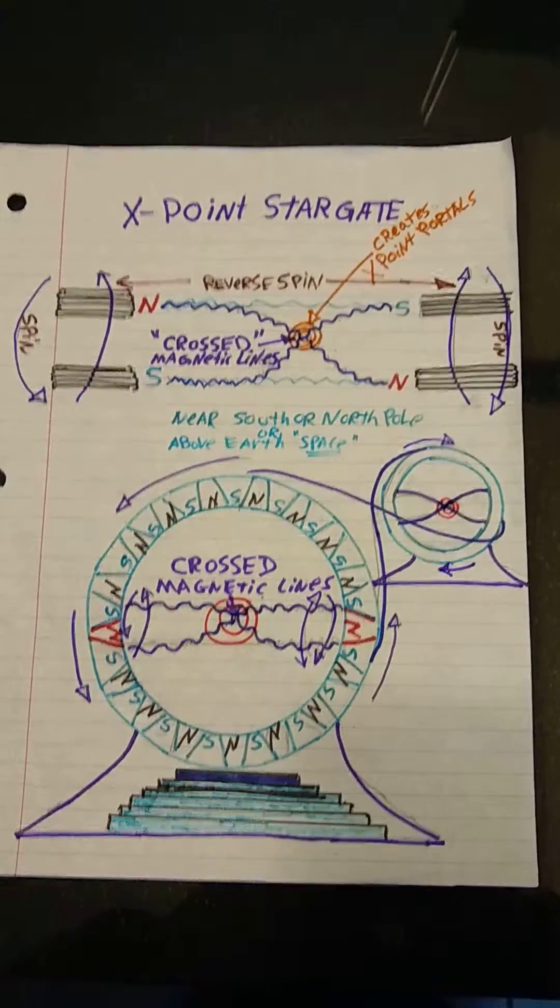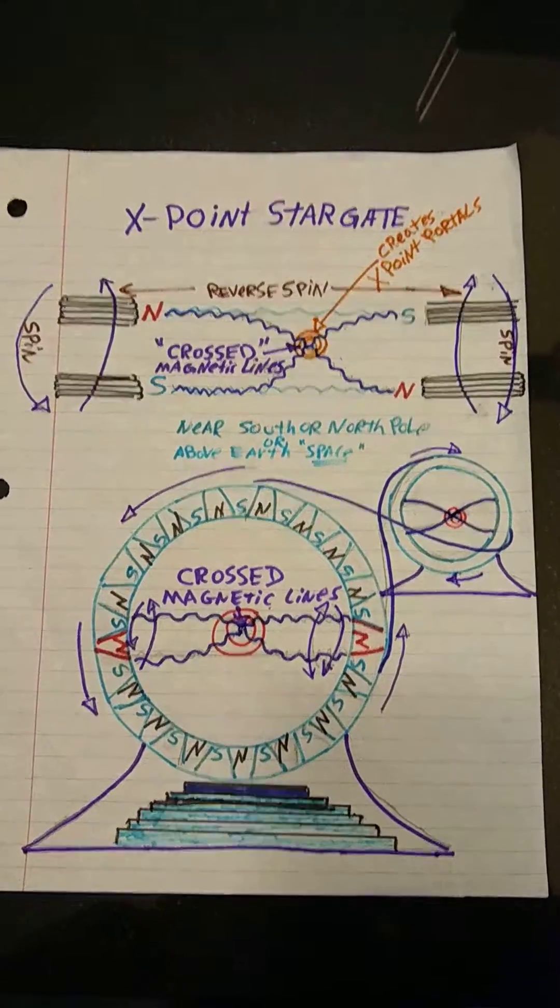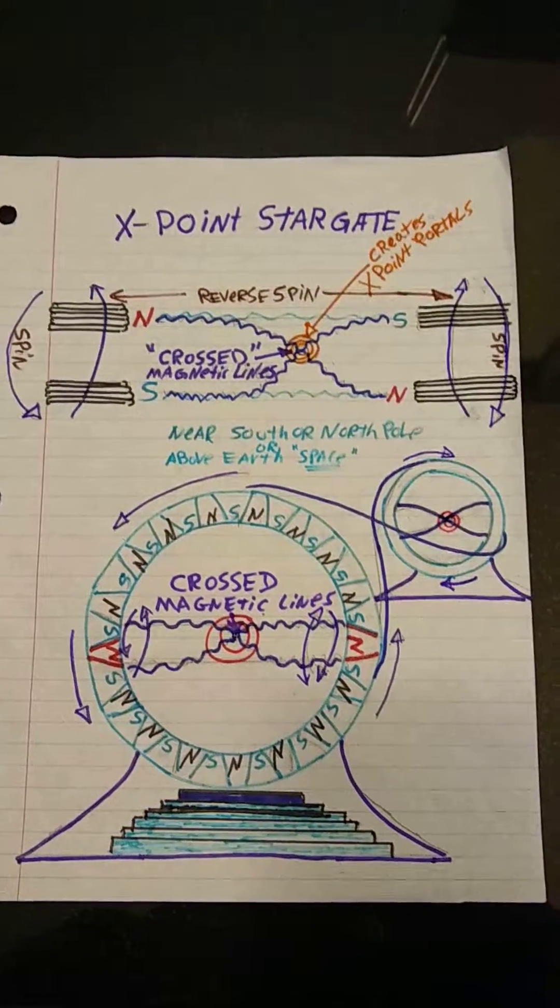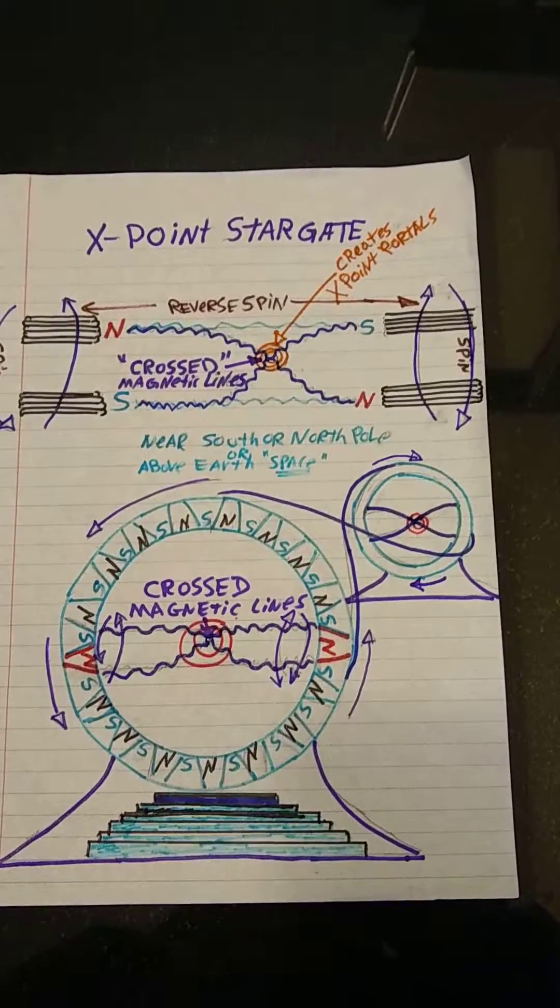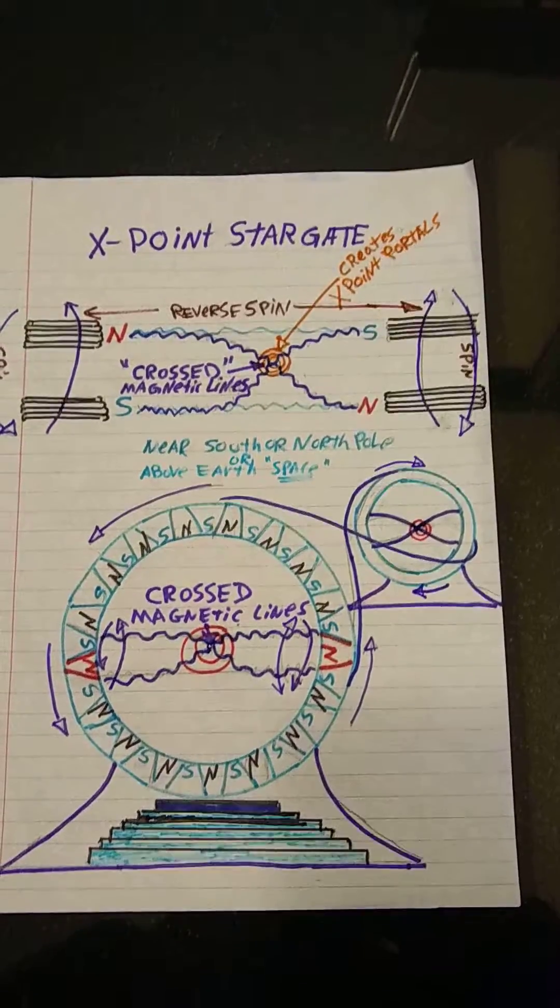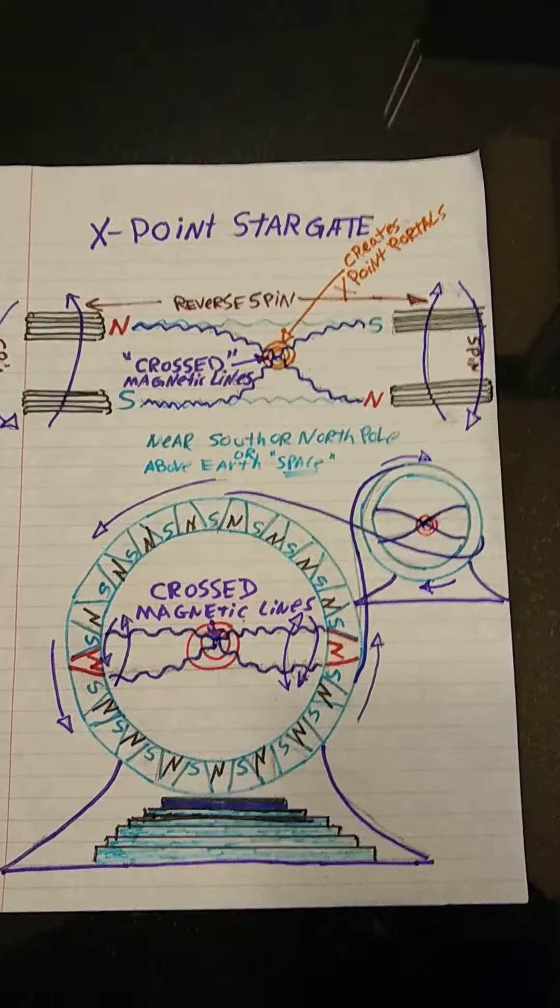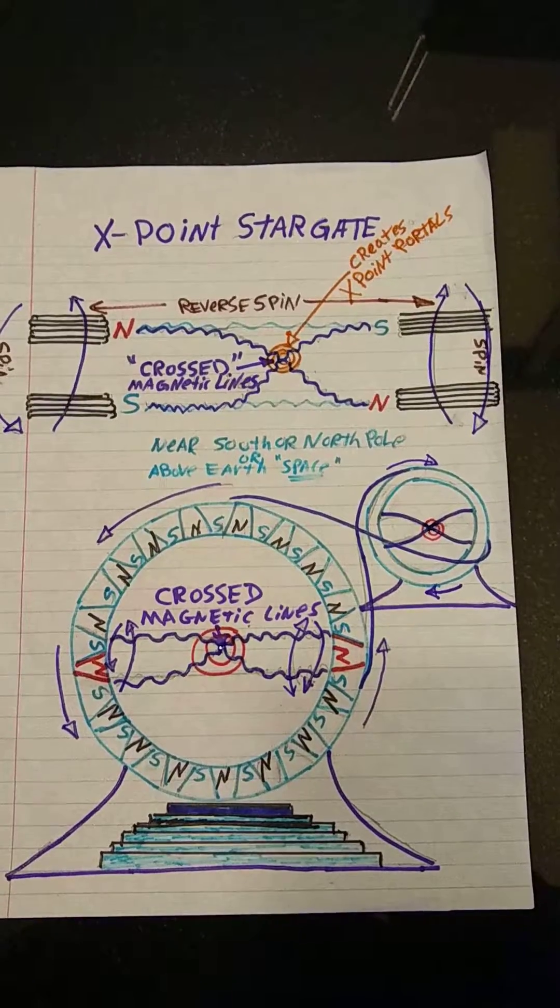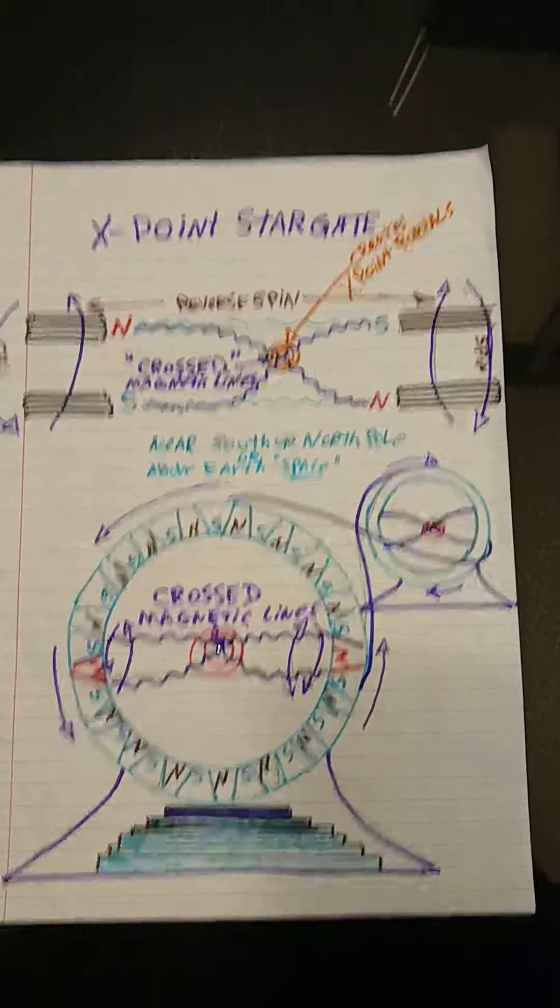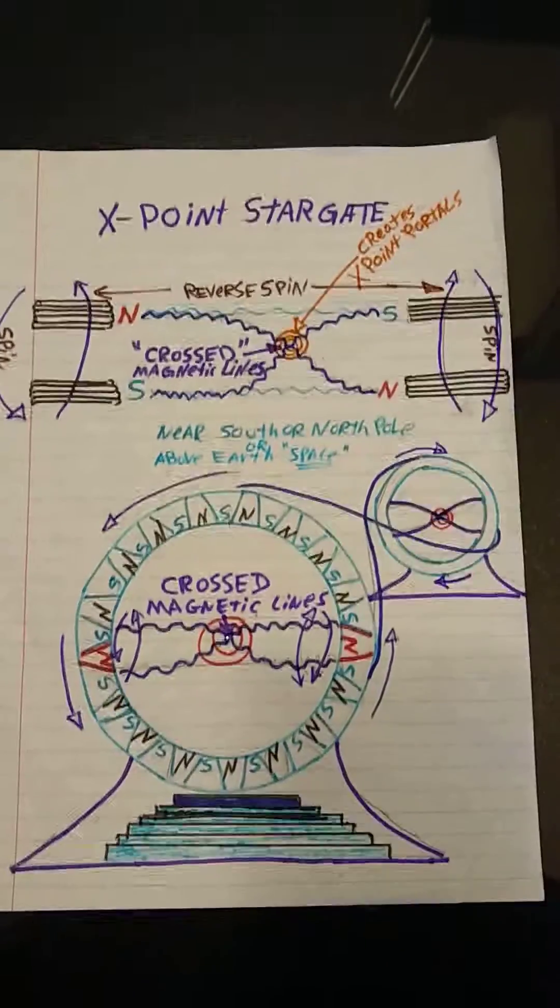Okay guys, I've been reading articles on the NASA research on X-point portals in space. They actually occur naturally about 10,000 miles away between the Sun and the Earth, and they actually open up when the magnetic lines from the Sun and the Earth get crossed. When they get crossed, they open a portal.